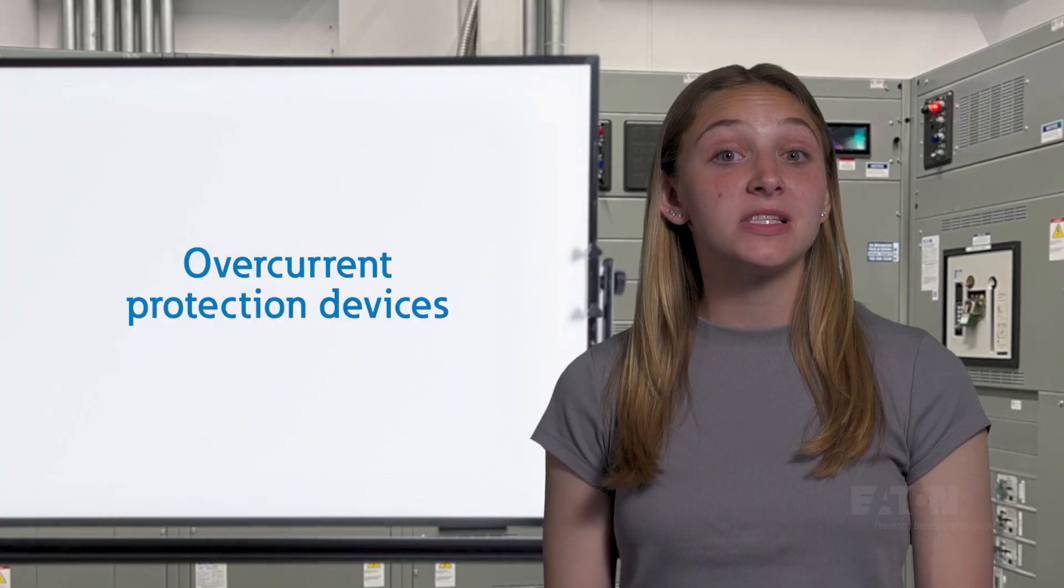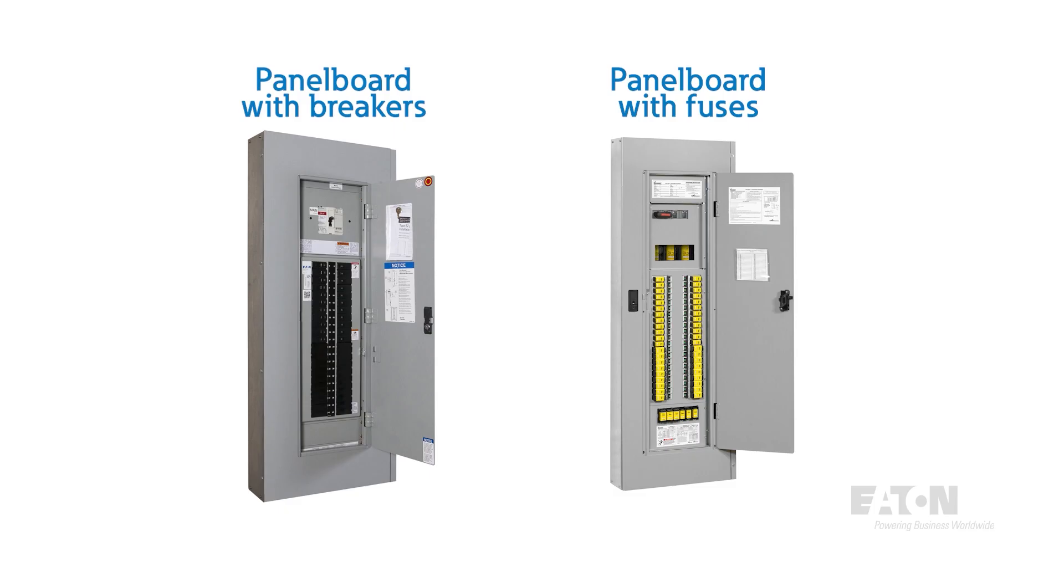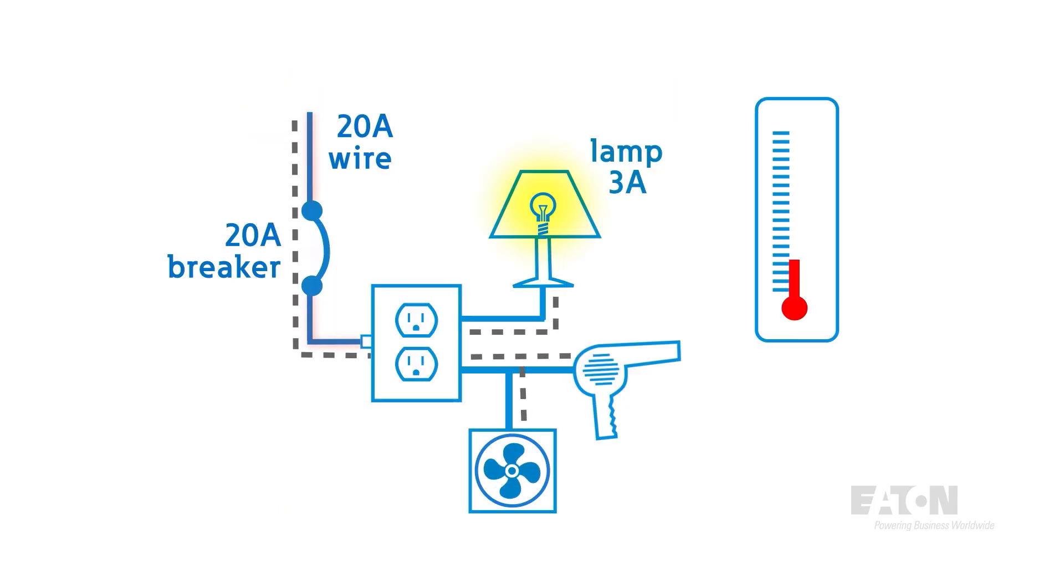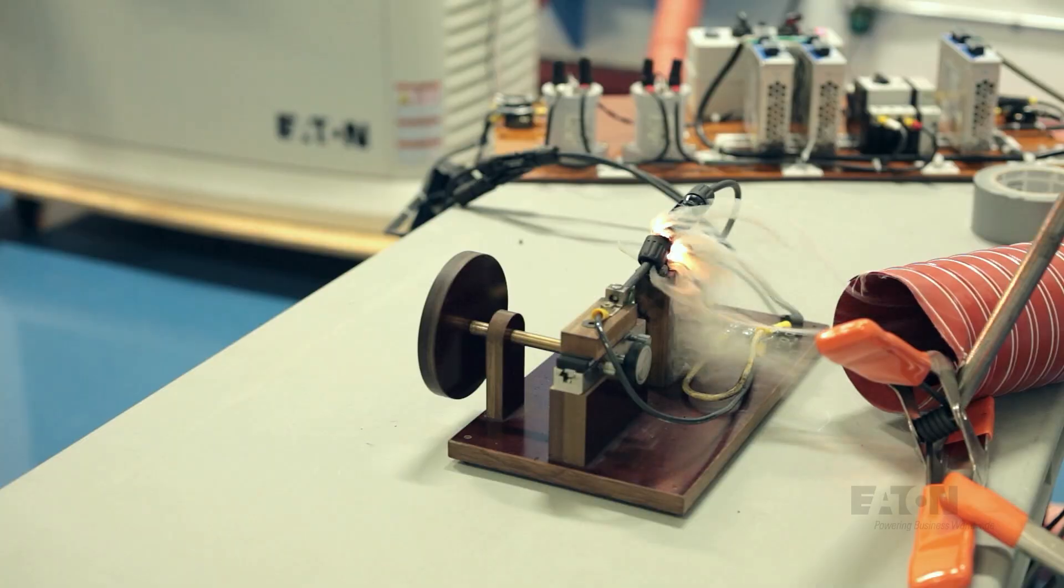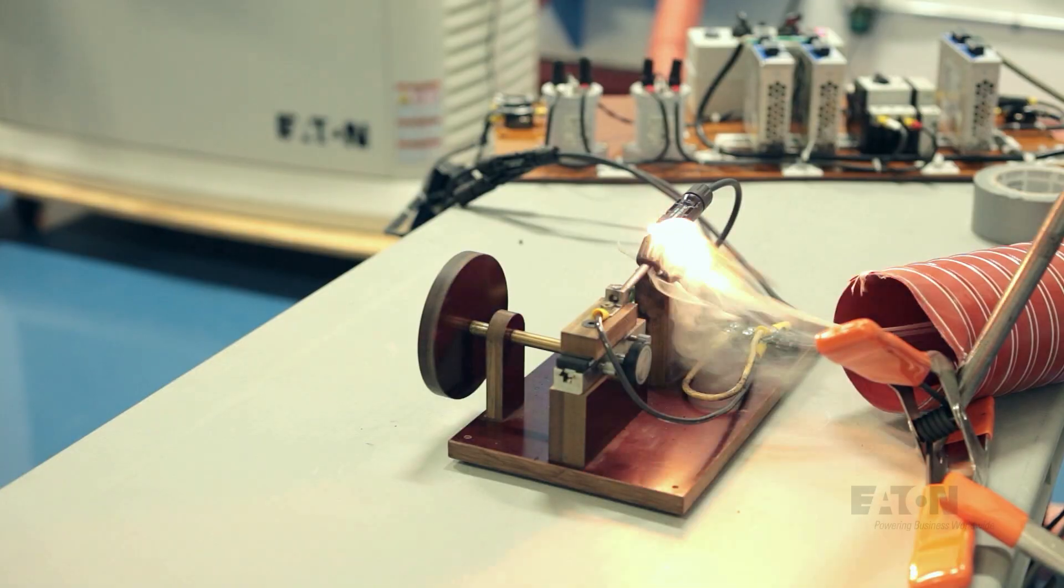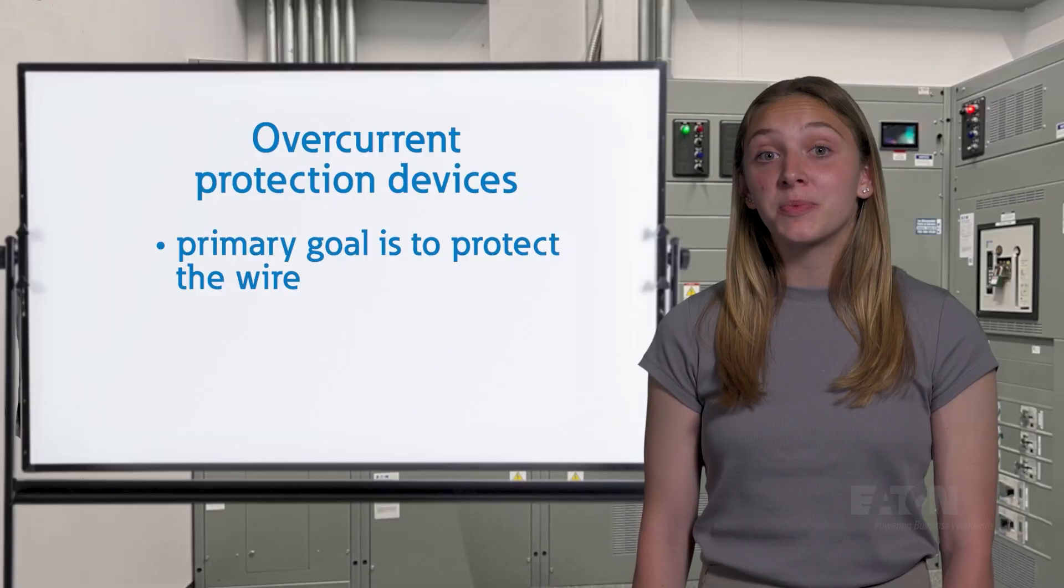This is why properly sized overcurrent protection devices like breakers and fuses are so important. To reliably open the circuit in case of abnormal conditions, thus preventing overcurrent situations from getting out of hand. The goal of this sort of protection is primarily to protect the wire from melting.